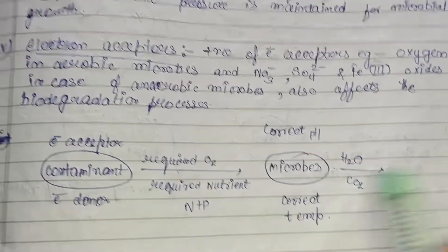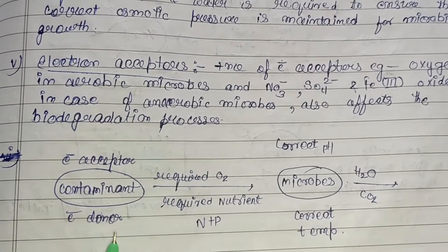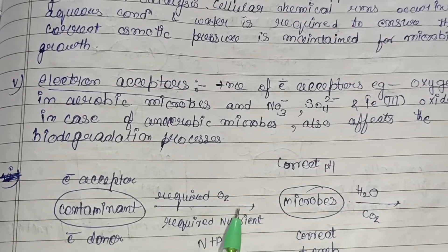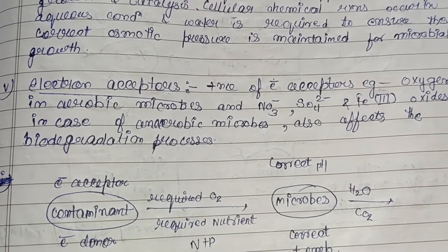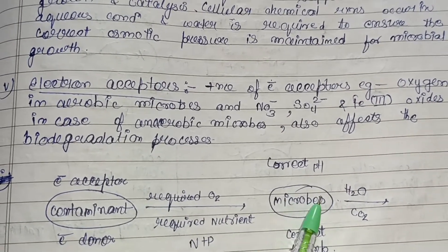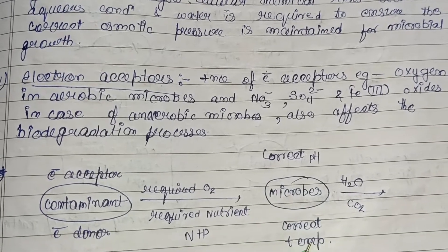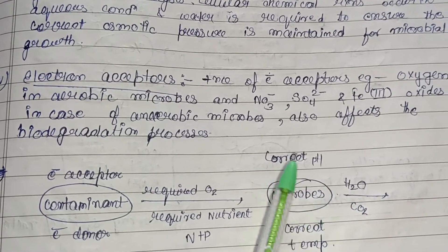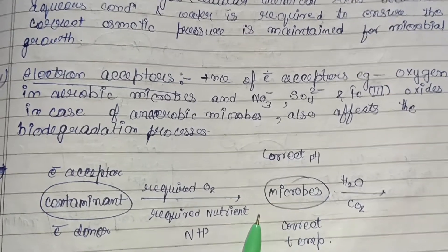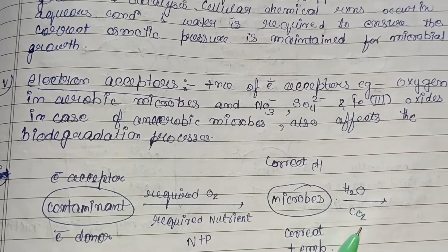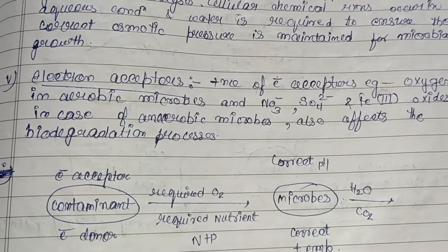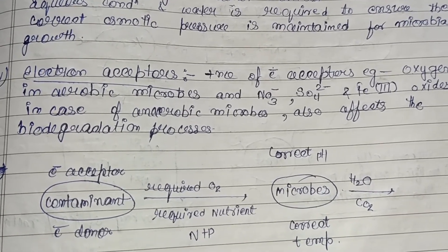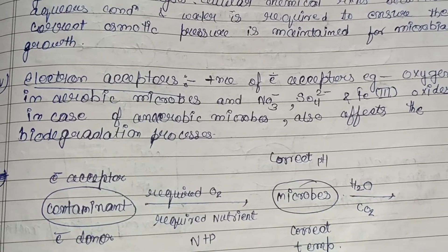This diagram summarizes the process: a contaminant — whether acting as an electron donor or electron acceptor — requires oxygen, nutrients (nitrogen and phosphorus), and microbes. The microbes require correct temperature and correct pH for their activity — this is where environmental modification takes place. At the end of the process, H₂ and CO₂ are released. This covers all aspects of environmental modification for bioremediation.